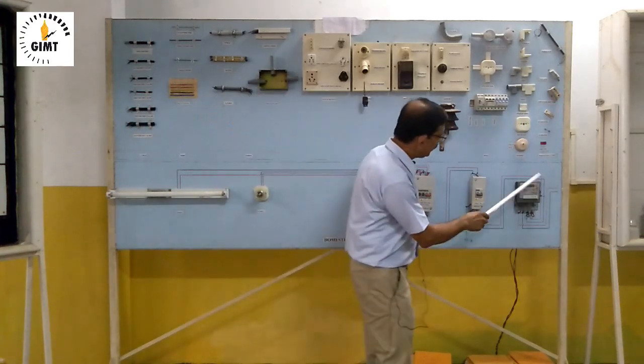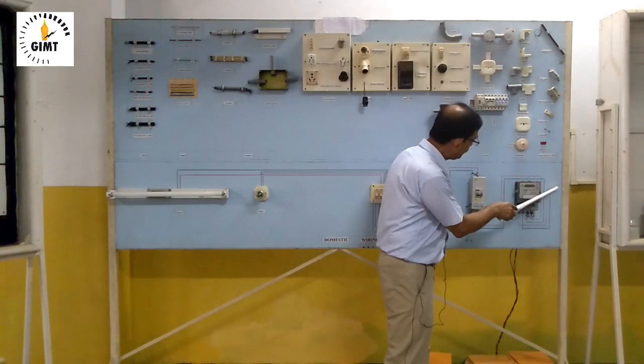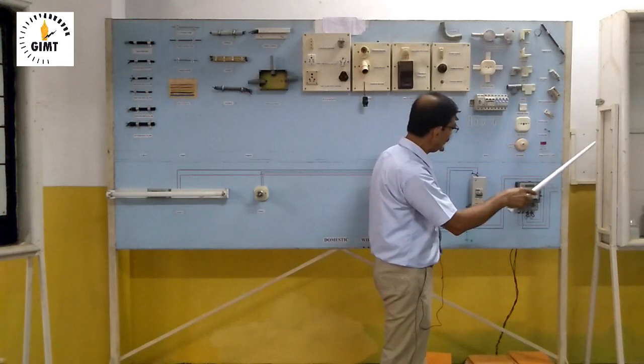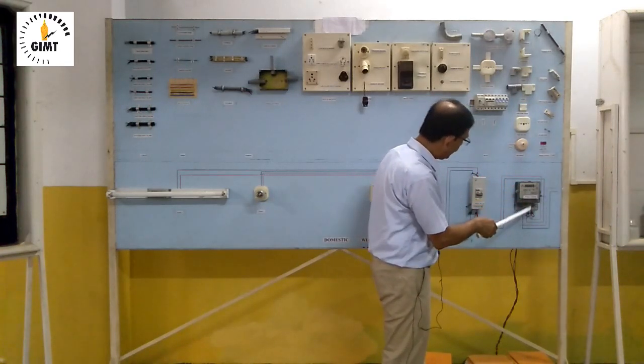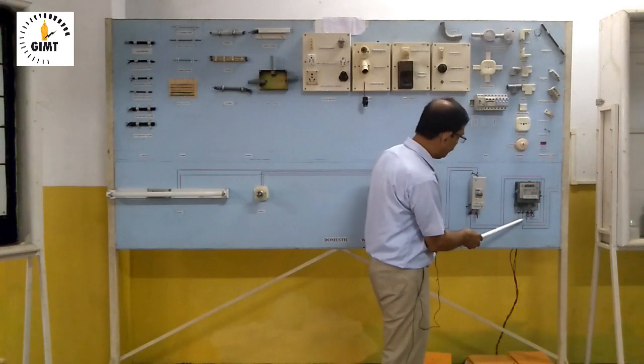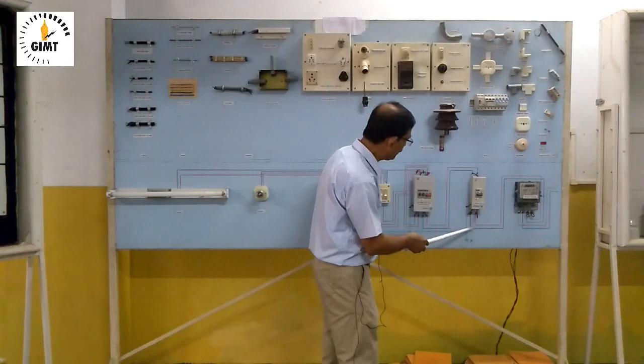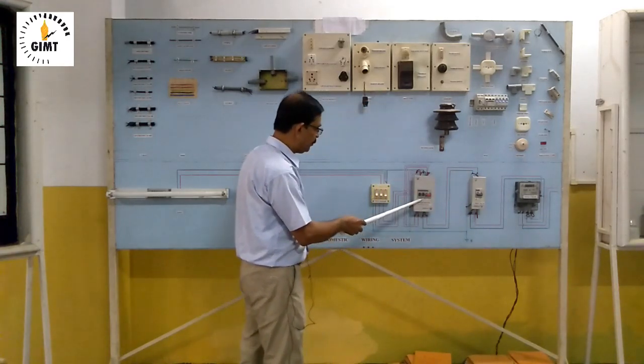In this, you have seen P and N means phase and neutral. This is coming from the supply, means AECB supply pole. We are bringing the phase and neutral to the meter. Then from meter, it is coming to the MCB. Then from MCB, it is going to the distribution box.